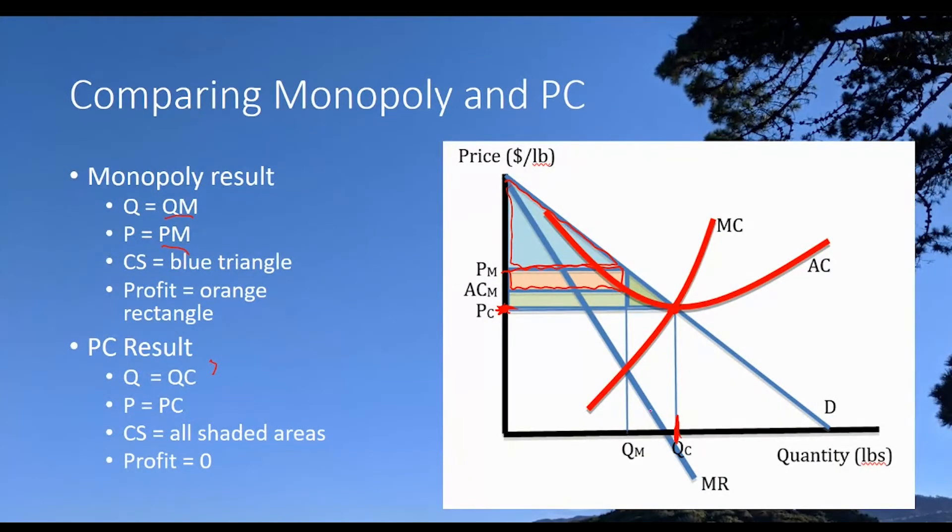So quantity goes up because of competition, just like we had said moving to a duopoly or an oligopoly. Price comes down, and what we end up with in the end is that consumers are going to get surplus given by all of this area right here now. That's going to be consumer surplus in the market, and profits in the market are going to be driven to zero.